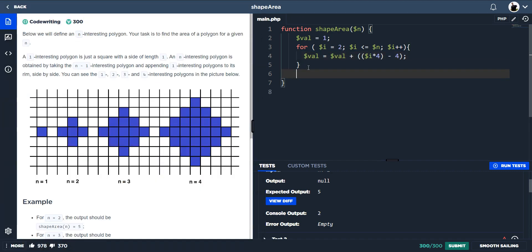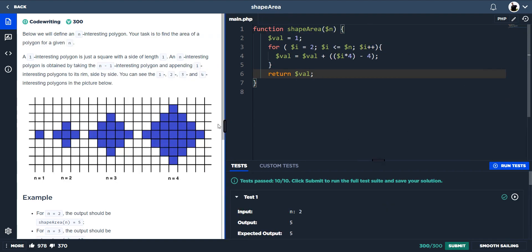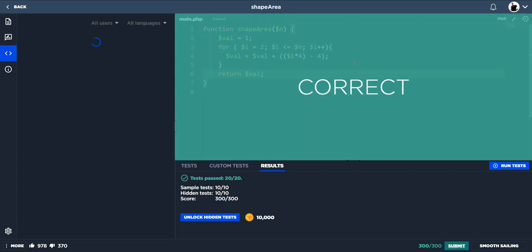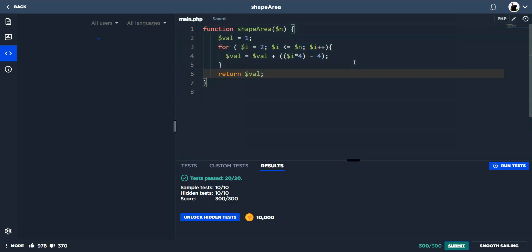So all what's left for us to do is to return the value. Run our tests and we've passed. If you're still confused on stuff, let me know. I'll try and explain in the comments or do a follow-up video. But this is the final code for shape area in PHP. Thank you.